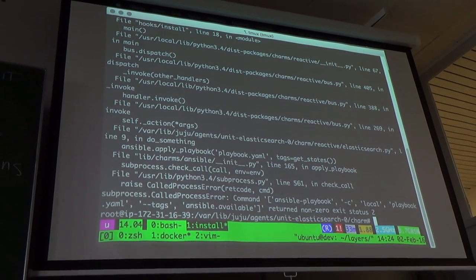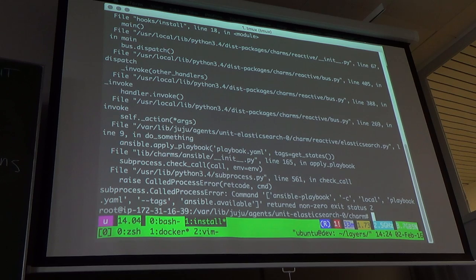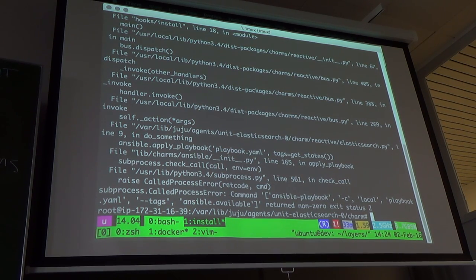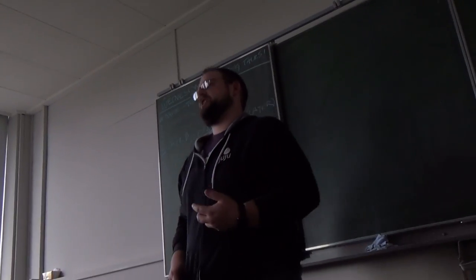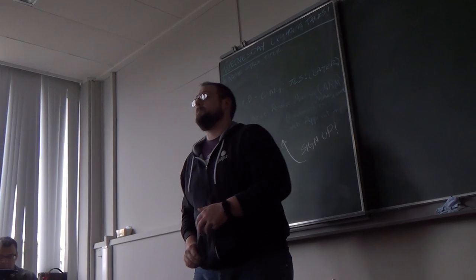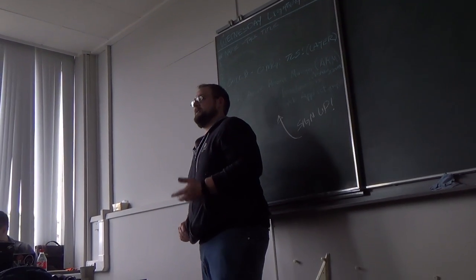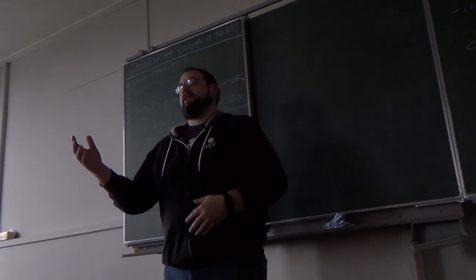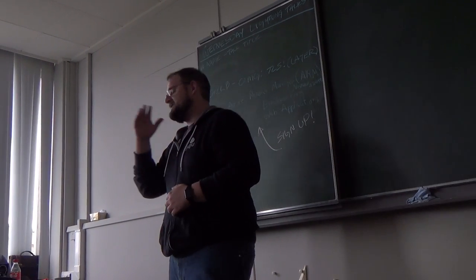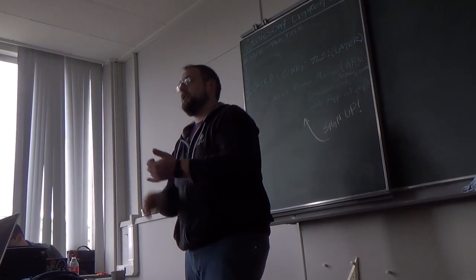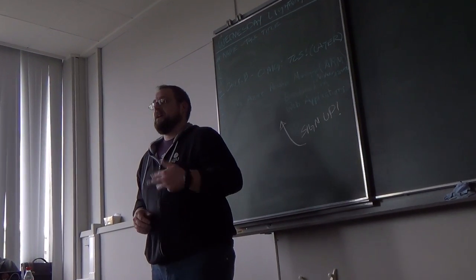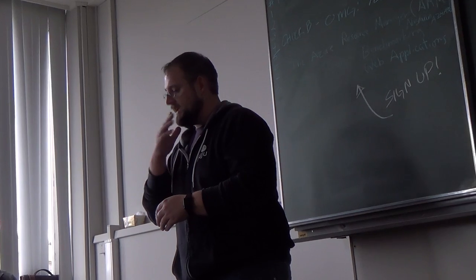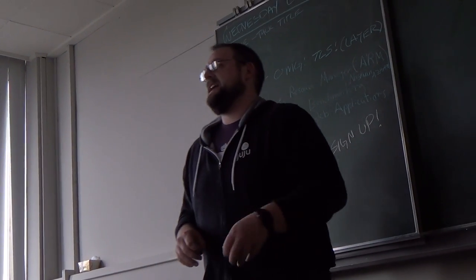The takeaway: with about 15 lines of Python, we integrated with a tool we already know, leveraging existing operational knowledge from configuration management when modeling services. You can consume charms from the Charm Store and use communication contracts via interfaces — for example, relating to MySQL to get a hostname, username, password, and database name — without needing to be an expert in how to deploy MySQL. You just relate and interact with it.